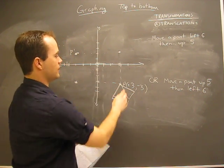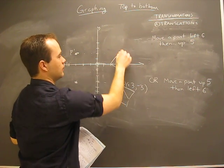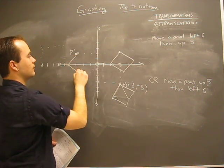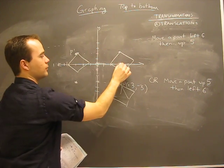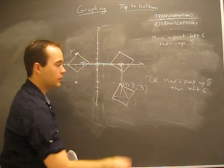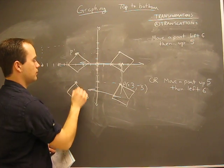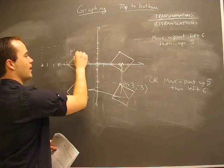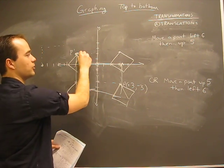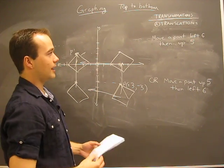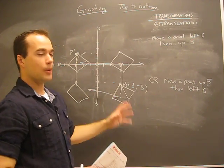We would move this thing up and then left. We went this way, or we could have gone this way and then up. You end up at the same spot. That's what I wanted to get through: combination of translations.